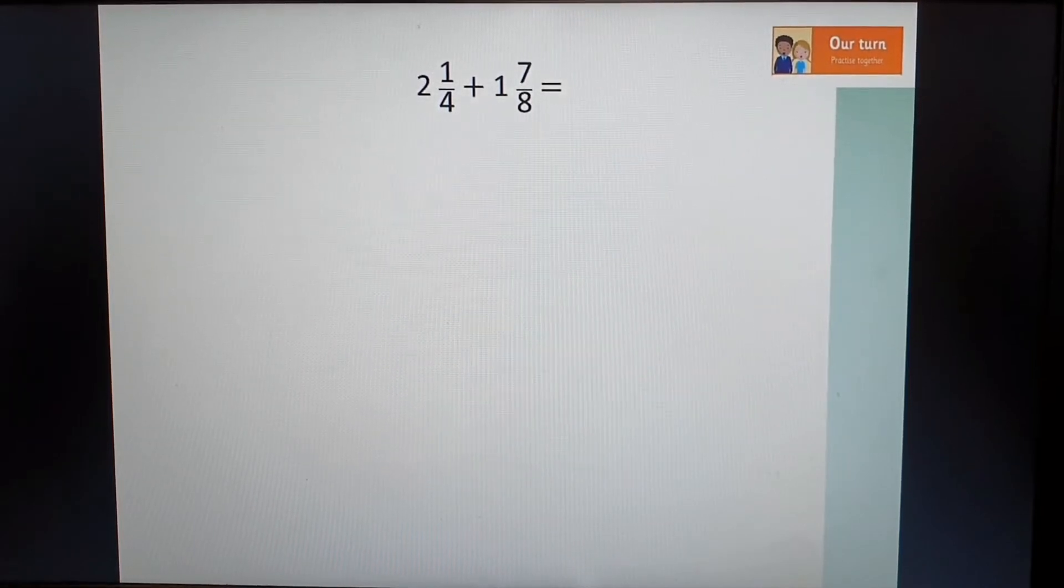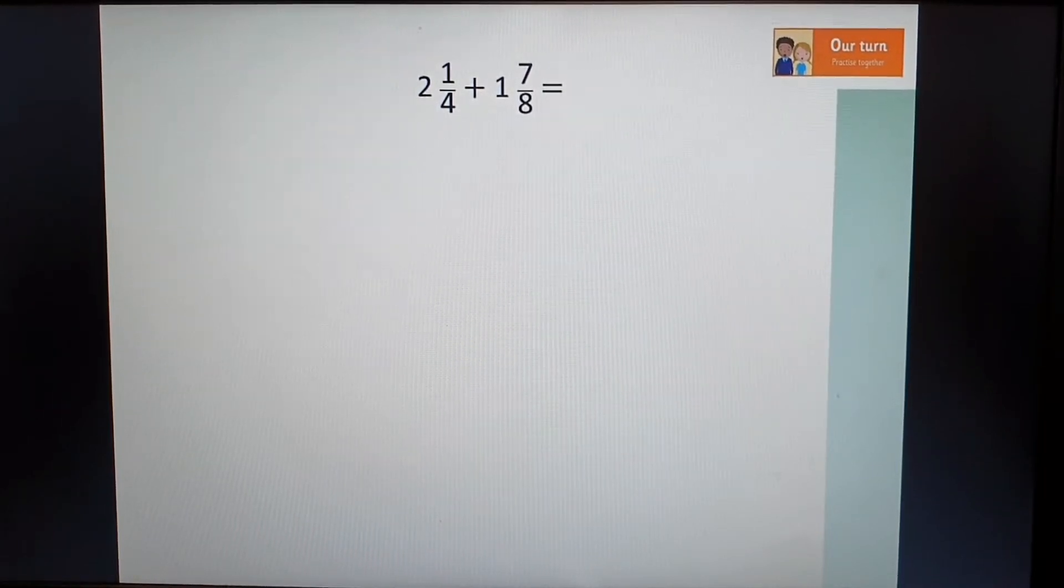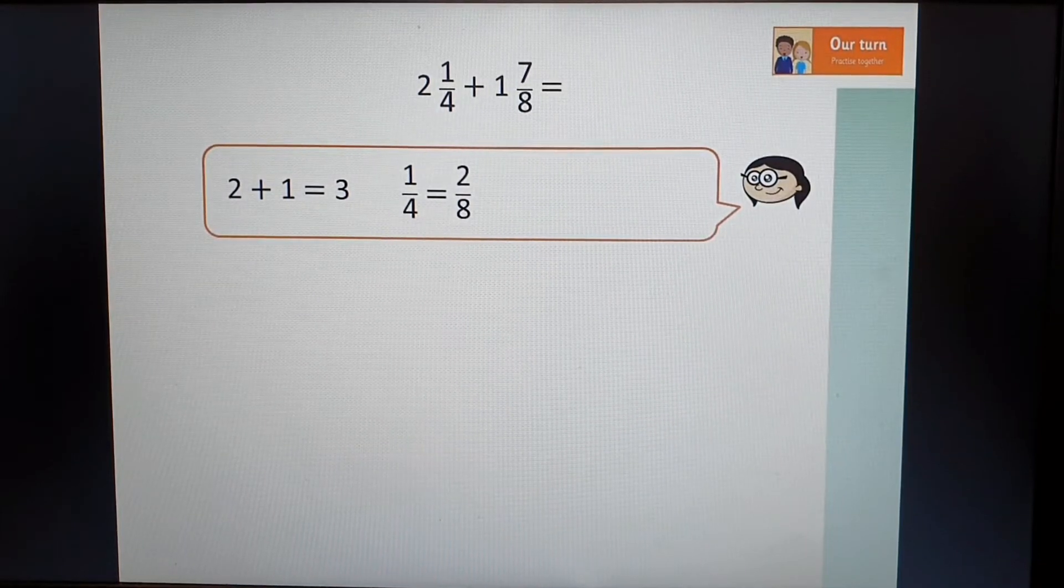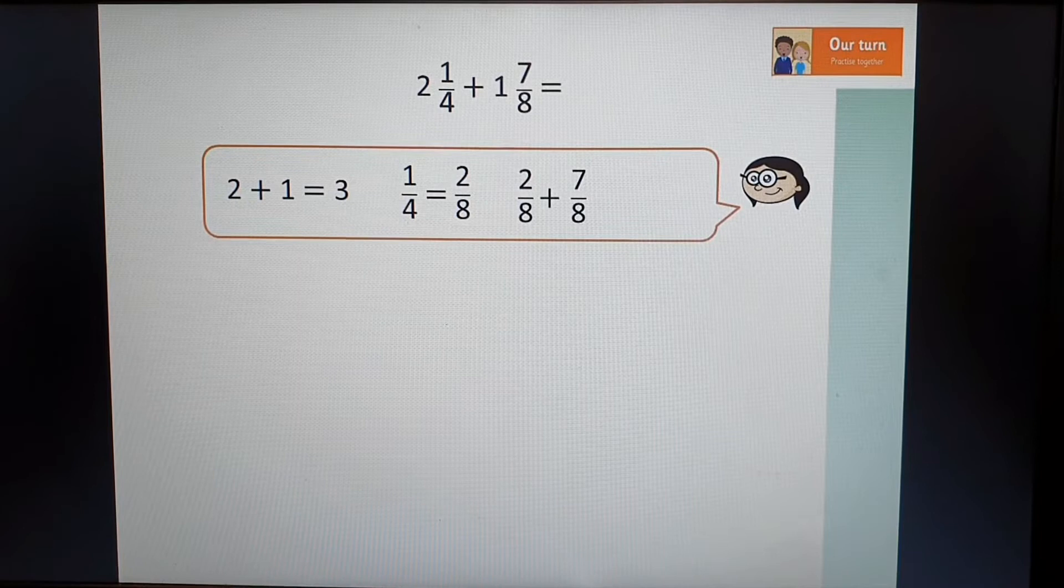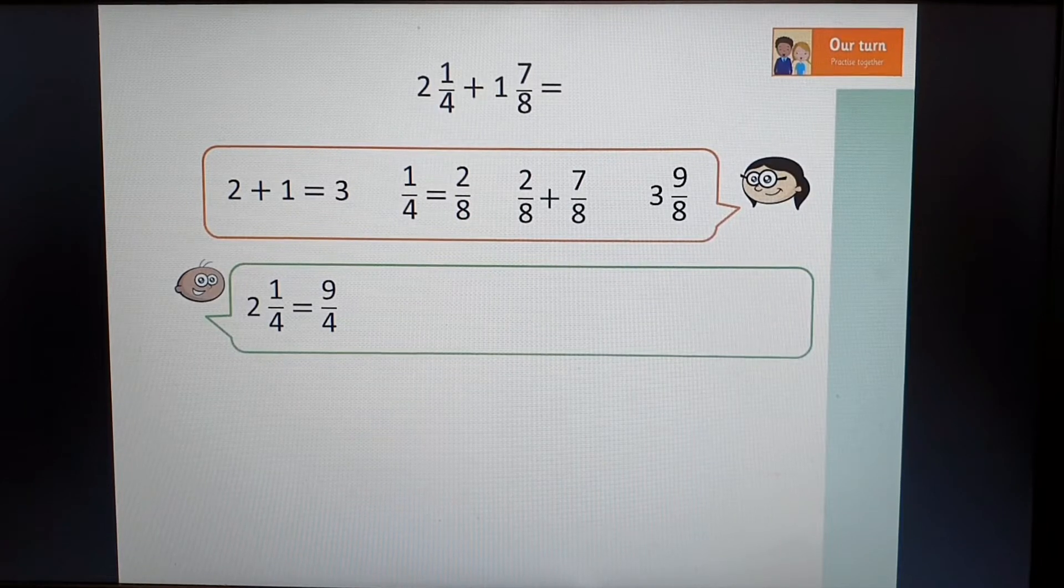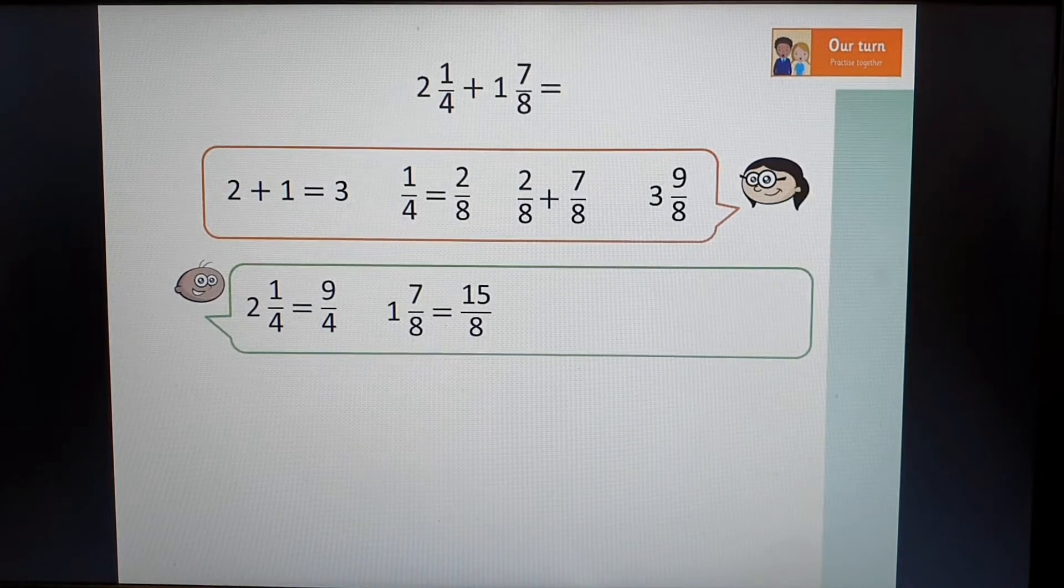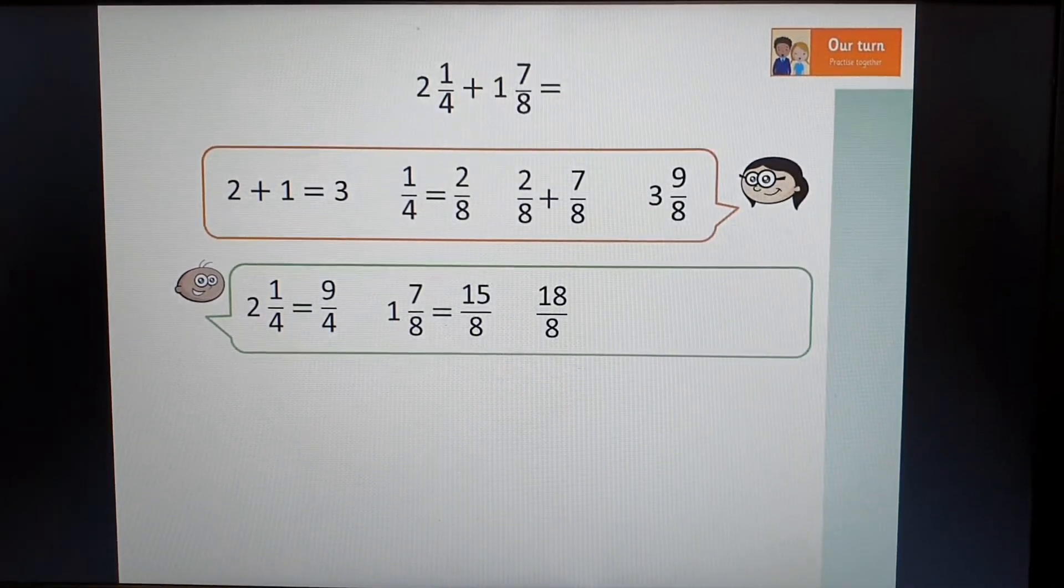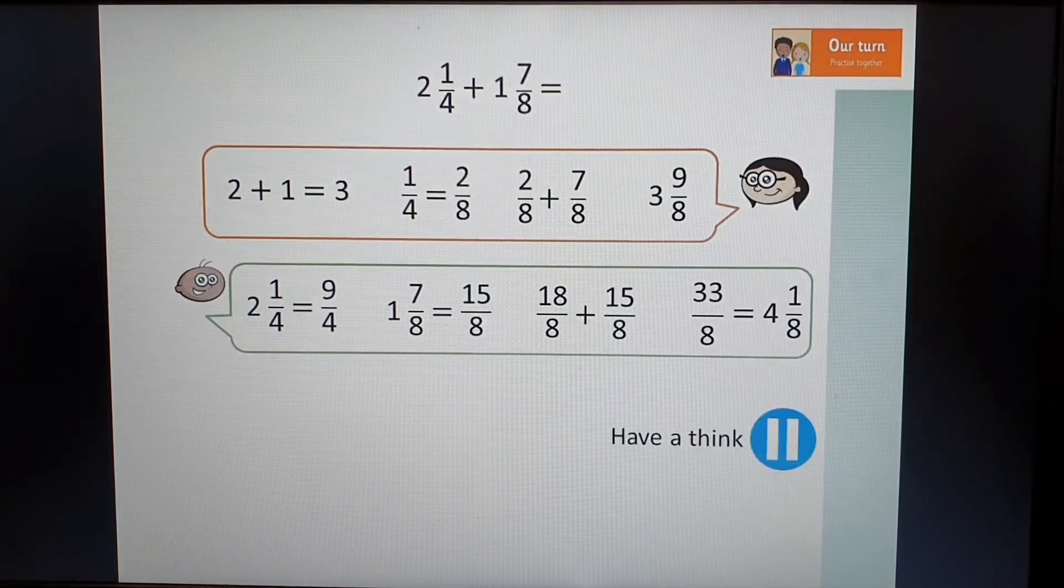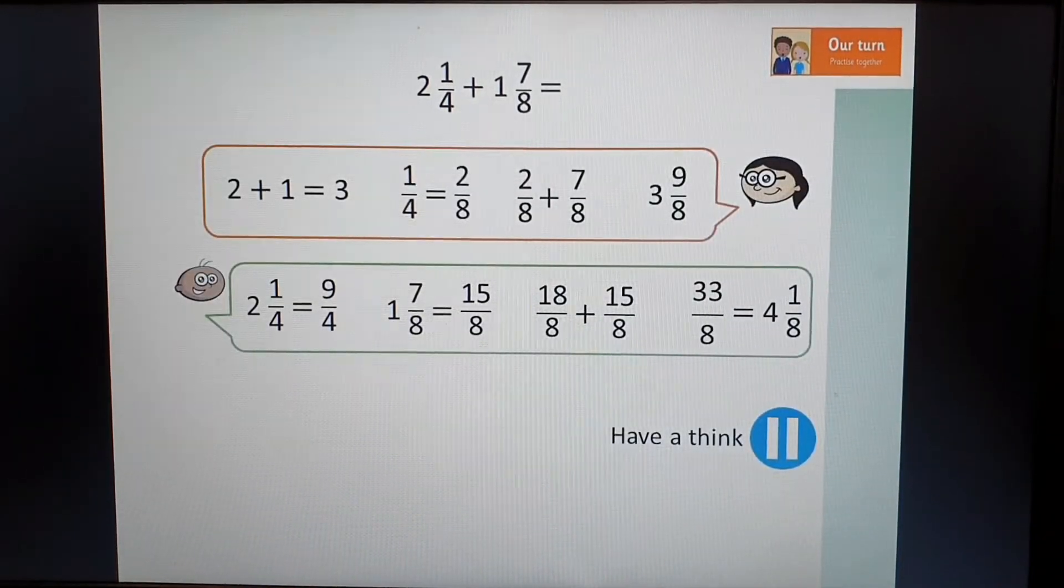For this one, I'm going to show you two different ways that two different people have had a go at it. I'd like you to try and work out which one is correct. This person has added the whole numbers, converted their fraction, added their two fractions together and added them back together. This person has converted them into improper fractions. So he's converted his two mixed numbers into improper and then added them together. They've got two different answers. Have a pause and have a little think. Which one do you think is correct?